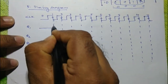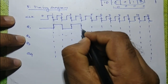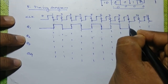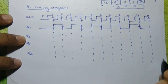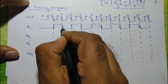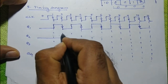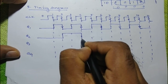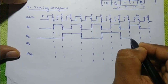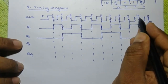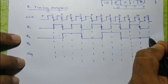Q1 toggles at the first negative edge, again at the second negative edge, and at the third negative edge. When the negative edge of Q1 is available at the clock of Q2, Q2 will toggle. So Q2 toggles at the second clock, then at the fourth clock, then at the sixth clock, then at the eighth clock. It is supposed to toggle at the tenth clock also, but this is prevented by the reset. So it will retain its status.